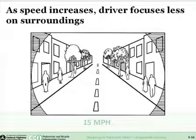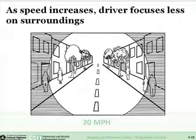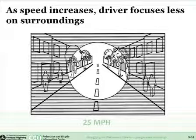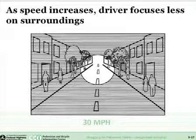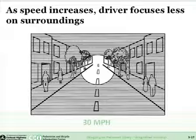At lower-speed roadways, drivers have a wider field of vision and are much more able to see pedestrians crossing from the left or right. As speed increases, the field of vision decreases, and at higher speeds, drivers are more likely to look at the horizon and less likely to notice pedestrians crossing from the sides. Oftentimes we see collision reports where the driver says the pedestrian came out of nowhere — but the pedestrian didn't come out of nowhere; the driver just wasn't watching and had their eyes fixed on the horizon ahead, which is common on higher-speed roadways.